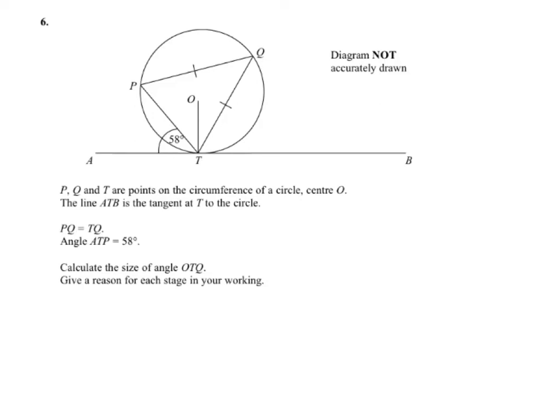To work your way through this problem, you want to draw in a couple of extra lines, two radiuses in fact. So we're going to go from P into the centre, and then we're going to go from O to Q. We should be told that the centre is O.